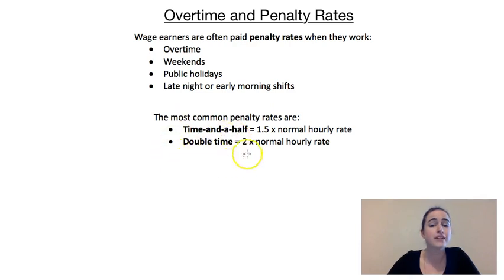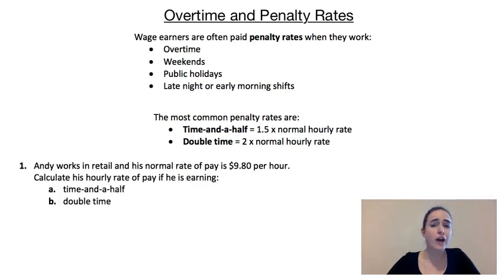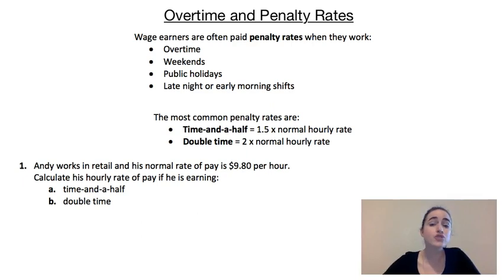If you were working double time and working a two-hour shift, you'd get paid as if you had worked a four-hour shift. So let's have a look at what that means with some numbers. Our first example: Andy works in retail and his normal hourly rate of pay is $9.80.